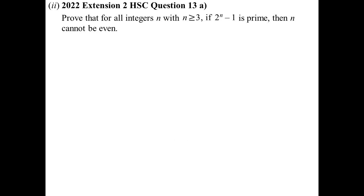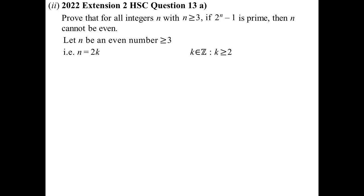Last year's HSC: prove that for all integers N greater than or equal to 3, if 2^N − 1 is prime, then N cannot be even. Let N be an even number — I'm going to do this by contraposition. So N is even, meaning N equals 2K where K is an integer greater than or equal to 2.